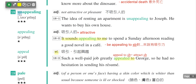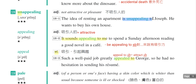前面加上un，unappealing就是不吸引人的。例句：The idea of renting an apartment is unappealing to Josh。所以collocation是：be unappealing to somebody，后面搭配to。